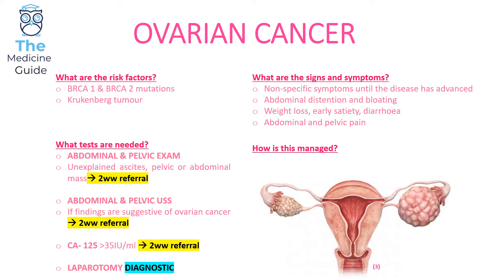A typical exam question on ovarian cancer might ask for the diagnostic test — in which case the answer is laparotomy. But if it asks for a test to monitor a patient with ovarian cancer or monitor for recurrence, then CA125 would be most appropriate. In terms of management, surgery is offered and platinum-based chemotherapy is needed.